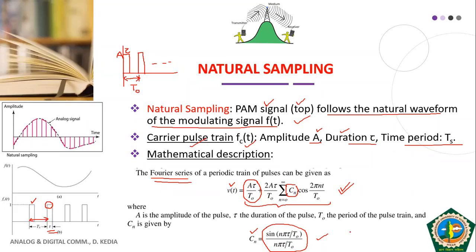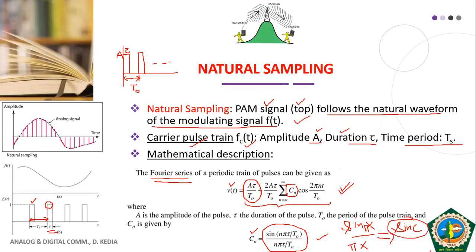The Fourier series coefficient has the form sin(x)/x, which can be represented as sinc(x). Specifically, sin(πx)/(πx) gives the sinc pulse — this is from your Fourier transform concepts studied previously. This completes the Fourier series representation for the periodic pulse train.